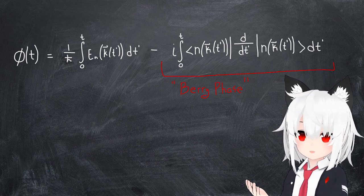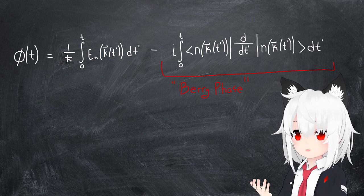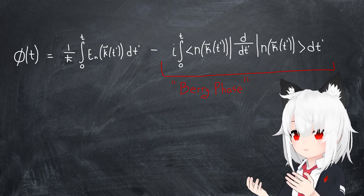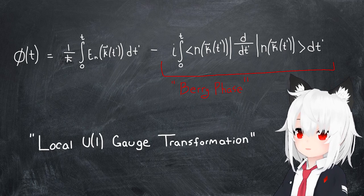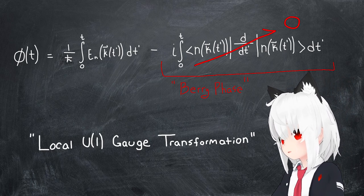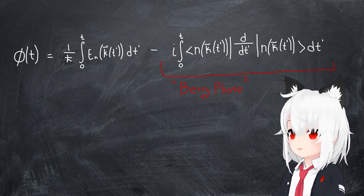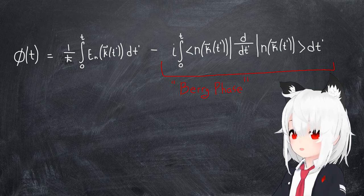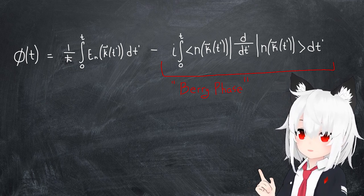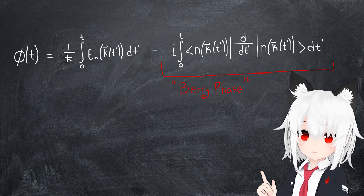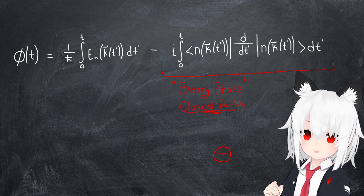But even in this case, it's not immediately obvious that this term even really matters, since you can always do what's called a local U(1) gauge transformation to shift this term to zero. This is sort of fancy talk, but suffice to say that this is generally true, except in the special case for when the adiabatic transport corresponds to a closed path.